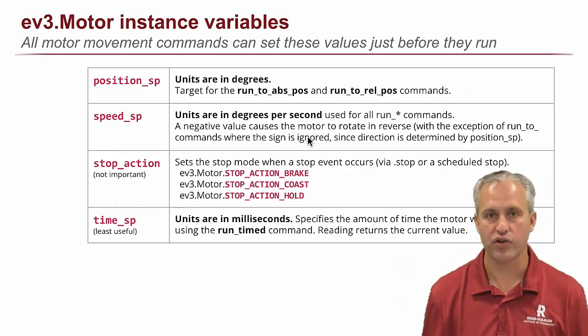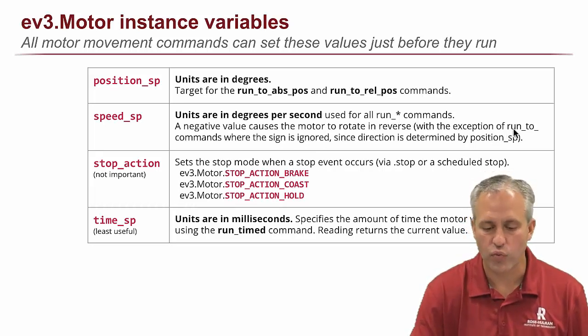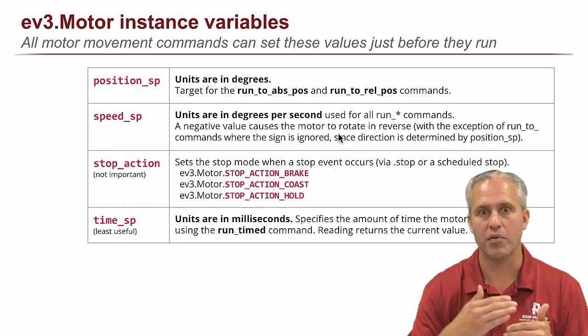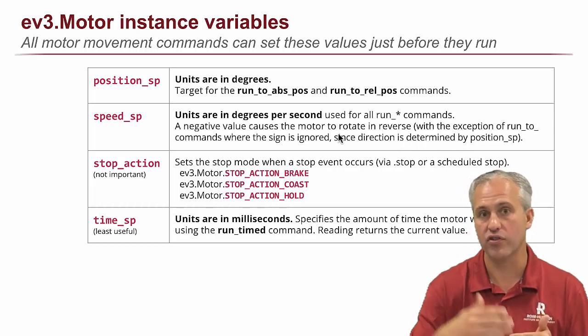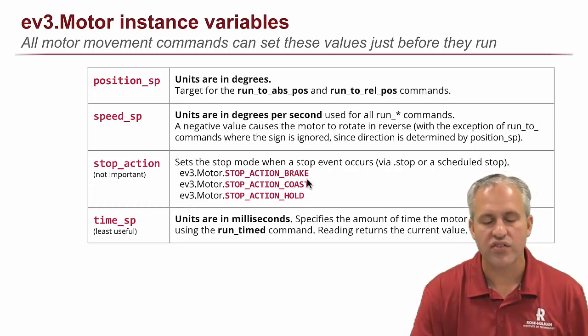Speed, speed is useful in all the drive commands other than stop, and it determines how fast you go. Positives go forwards, negatives go backwards. Technically, the run to's, the sign is ignored because the direction is determined by the position you're trying to get to. If you're trying to go forwards, it goes forwards, even if you say negative in the speed.